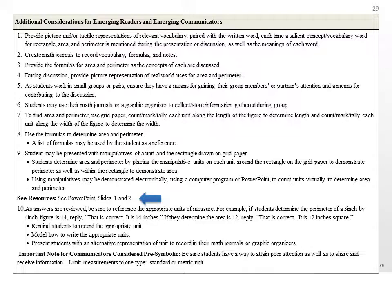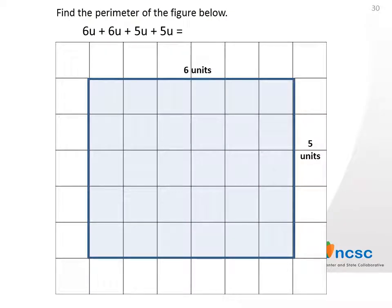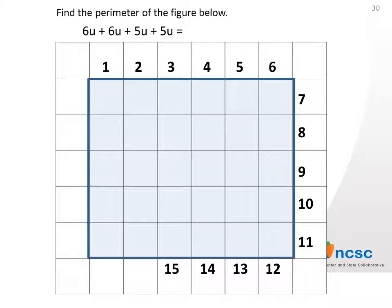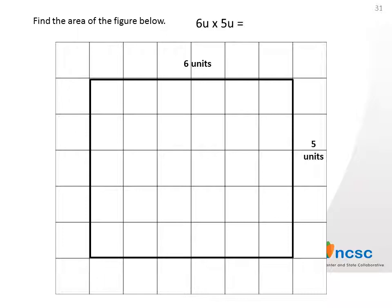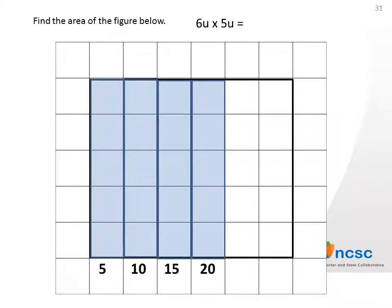Sometimes additional resources are provided as examples of supports for representing or demonstrating the content. One example is a resource included in the High School Instructional Unit for Lesson 1, Introduction — Activate Previous Knowledge. It is a PowerPoint created for a student, showing one way perimeter may be presented or explored. Another example shows one way area may be presented or explored by a student during a lesson.